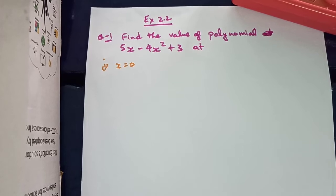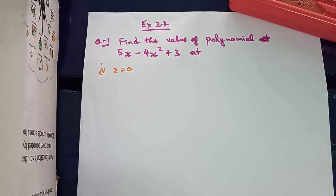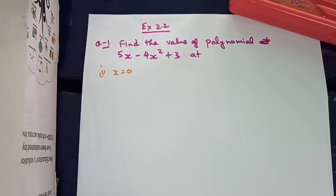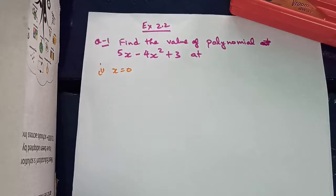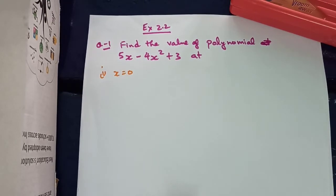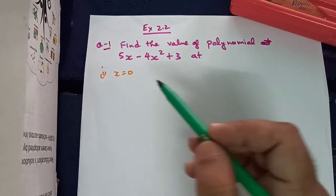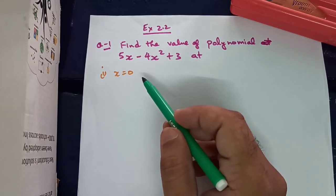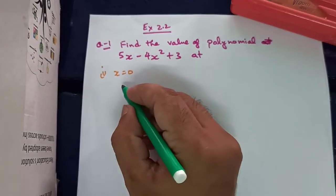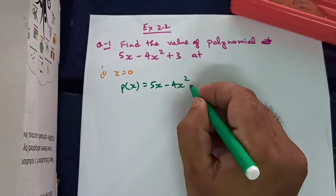Good morning students. Today we will be discussing Exercise 2.2. The first question asks us to find the value of the polynomial 5x minus 4x squared plus 3 at x equals 0. What we have to do is substitute the value of the variable x as 0, and then find the value of the polynomial after substituting.